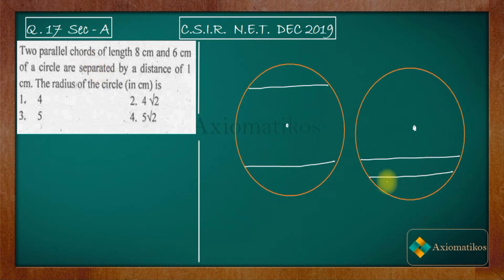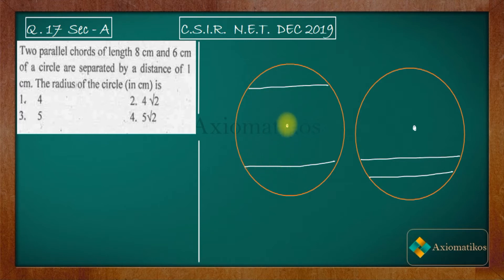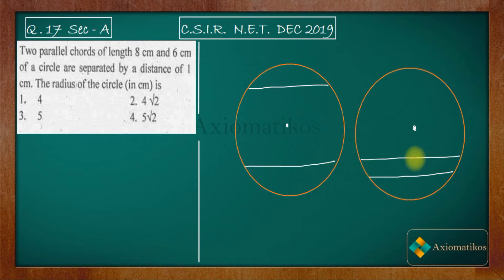Since we have two parallel chords, there are exactly two possible cases. Case one: both chords are on opposite sides of the center — meaning the center lies between them. Case two: the center is on one side and both chords are on the same side. These are the only two possible configurations.